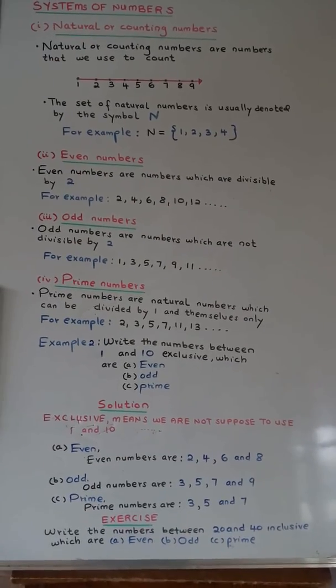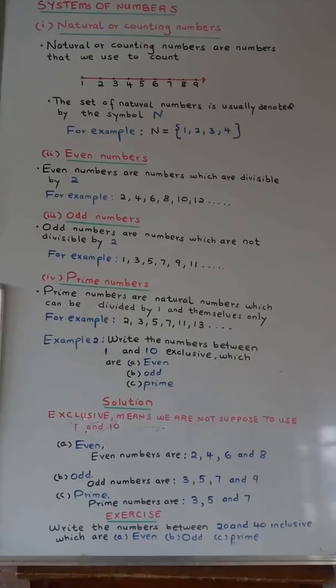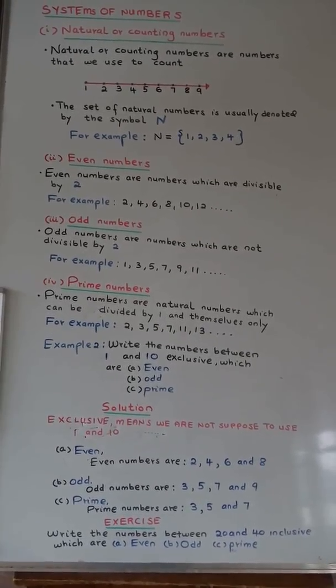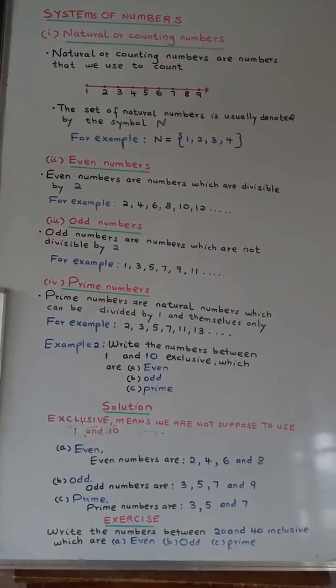Exercise. Write the numbers between 20 and 40 inclusive which are: (a) even, (b) odd, (c) prime.